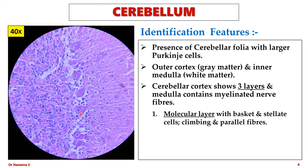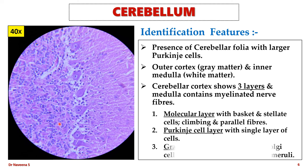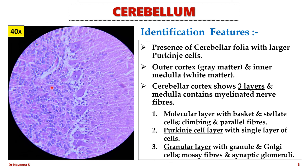The Purkinje cell layer is a single cellular layer showing flask-shaped Purkinje cells with a centrally placed large nucleus, dendritic processes projecting into the outer molecular layer, and an axon into the underlying granular layer. The deepest layer, the granular layer, contains granule cells and larger Golgi cells, along with mossy fibers and synaptic glomeruli.